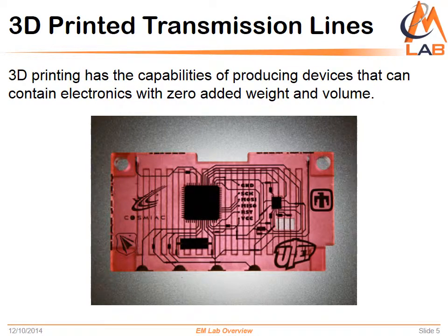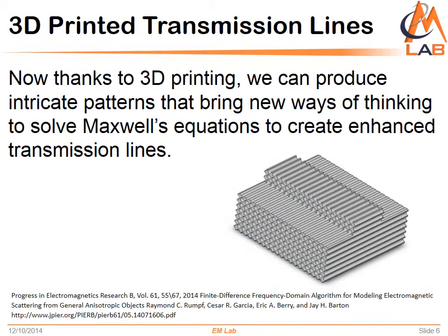Imagine your circuit being part of the structure that holds your car together, or a phone thinner than what we have because the electronics are part of the case body. Picture having an antenna inside your glasses that transmits information to your lens with very little power consumption. What this means for transmission lines is that it opens the envelope of design and construction to the next level of thinking — we can now produce intricate patterns that bring new ways of thinking to solve Maxwell's equations and create enhanced transmission lines.